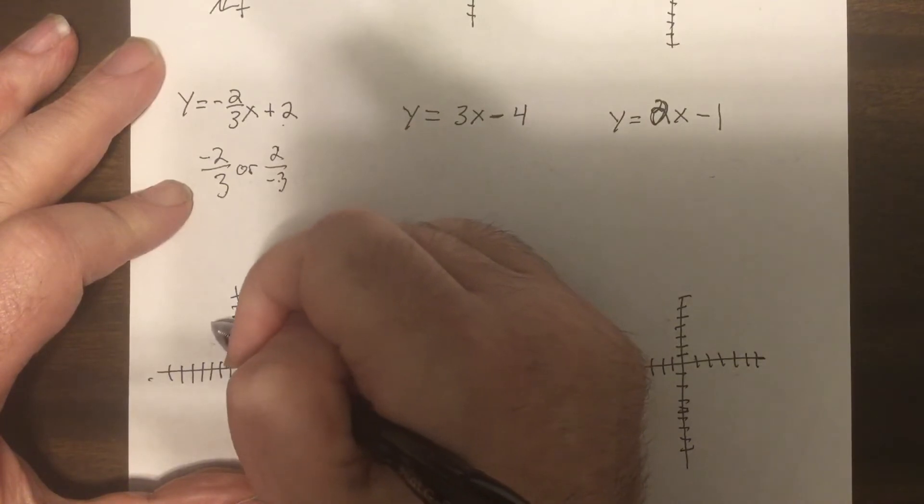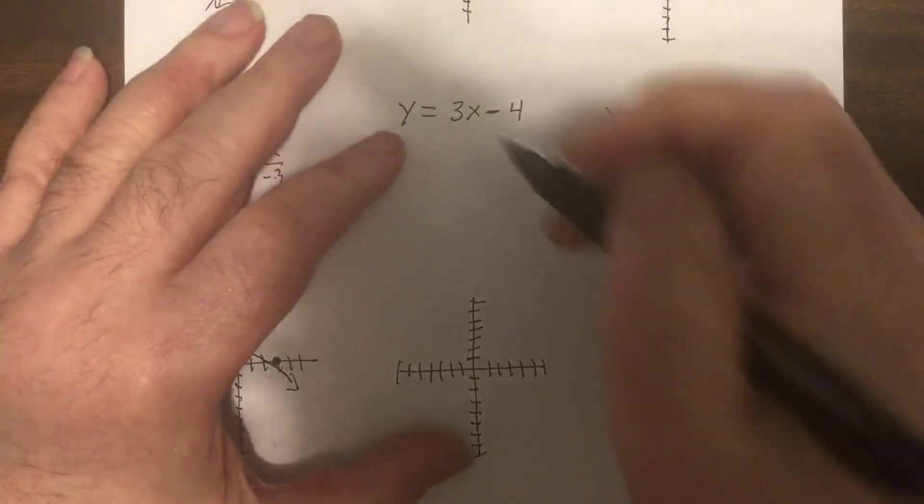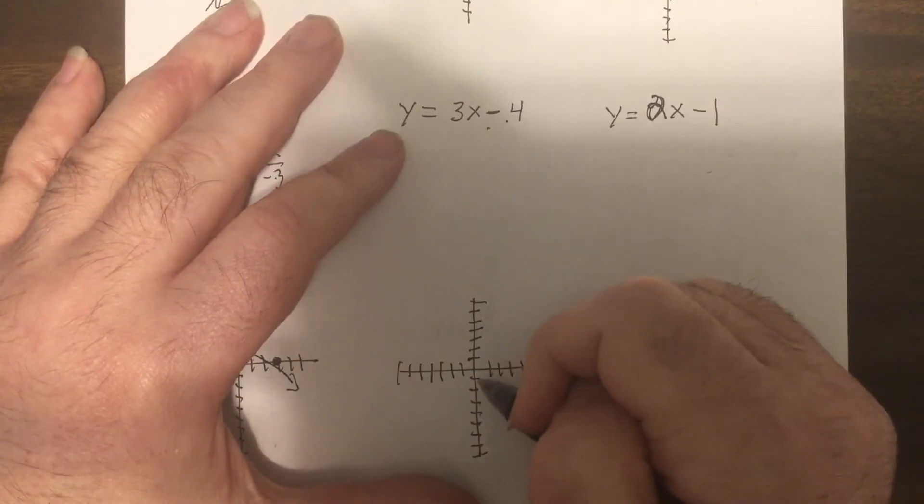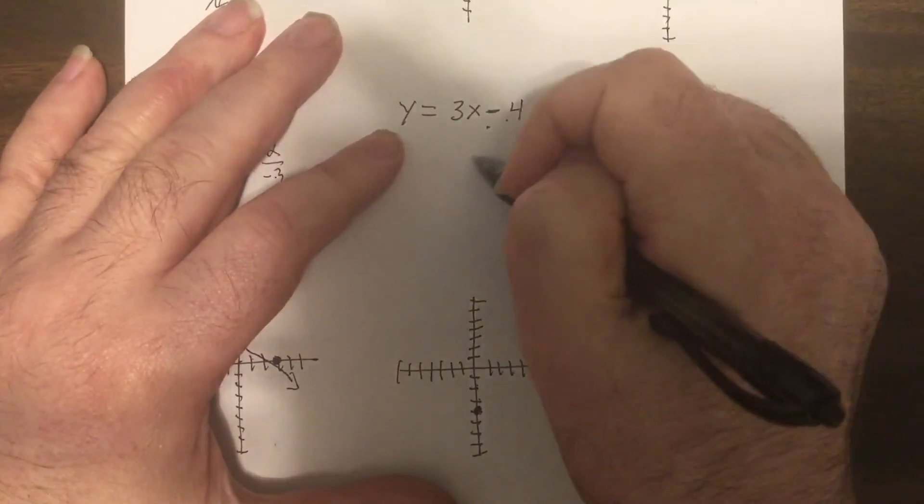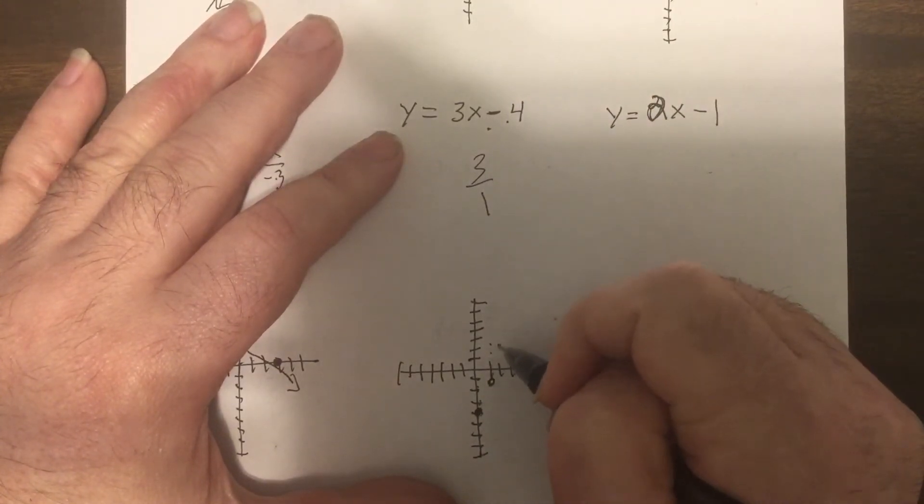So this one, y-intercept's negative four, so put a dot one two three four. Then it's three over one, so it's up three one two three over one, one two three over one.